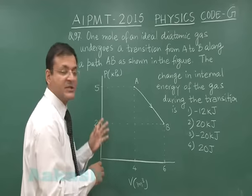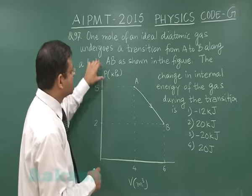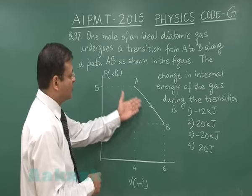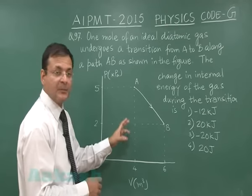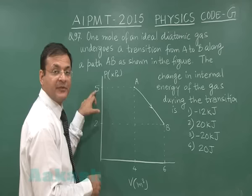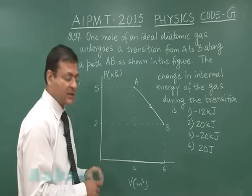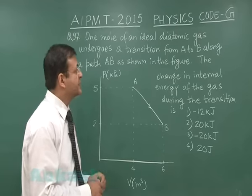This is a pressure volume diagram which has been given to you. You can see pressure is plotted in kilo Pascal and volume is in meter cube. From A to B the values have been marked. A starts with pressure 5 kilo Pascal and terminates at point B at 2 kilo Pascal. The volume initially was 4 meter cube then finally 6.